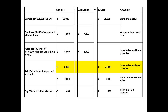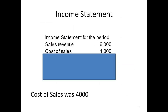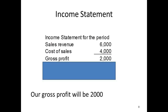I now need to determine the cost of sales — how much did we pay for the units that we sold? I can find this in the transactions. I have highlighted the relevant transaction; the figure that I need is £4,000. I enter the cost of sales onto the income statement and subtract this from the sales revenue, which gives me a figure of £2,000 for the gross profit.